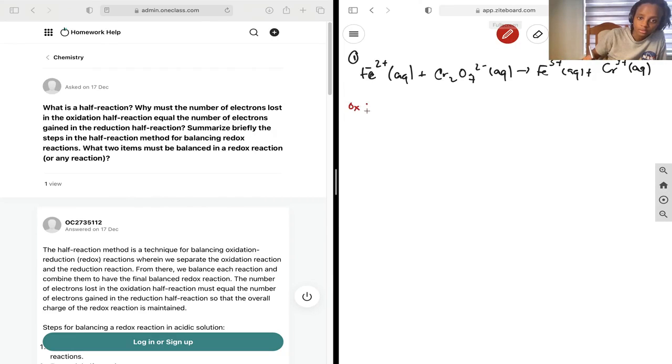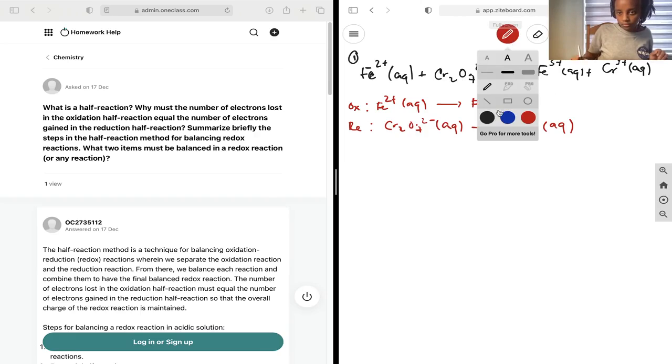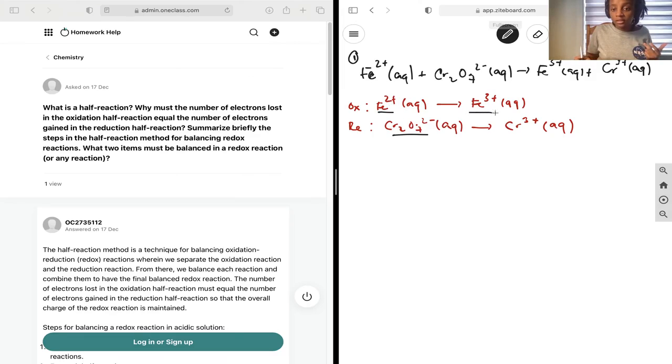We're going to write down our separate equations. For oxidation, Fe2+ aqueous to Fe3+ aqueous. For our reduction reaction, Cr2O7^2- aqueous to 2Cr3+ aqueous. Because this is oxidized, this is our reducing agent and this is our oxidizing agent, because it oxidizes iron and this reduces this. This becomes our oxidized product and our reduced product.